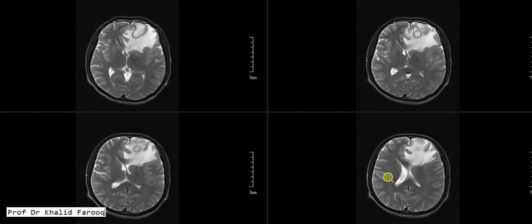Bismillahirrahmanirrahim, assalamu alaikum warahmatullah. We are discussing MRI of the brain. This patient has presented with high-grade fever. This is an axial T2 weighted sequence and we can see abnormal signals in the left frontal lobe.